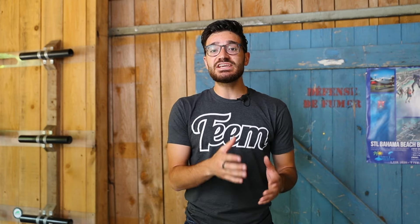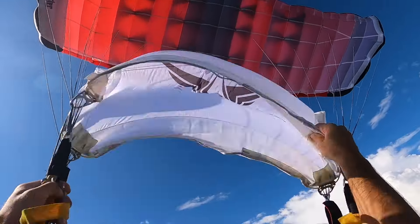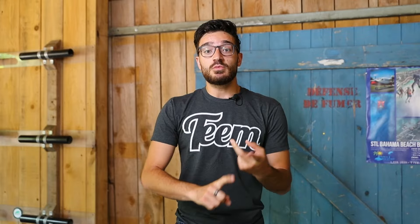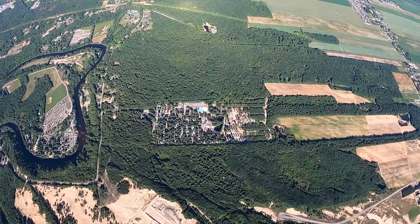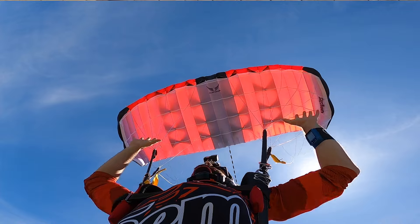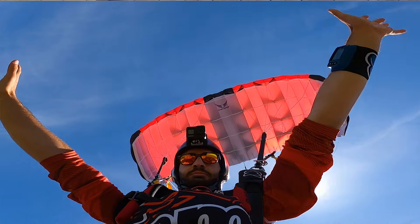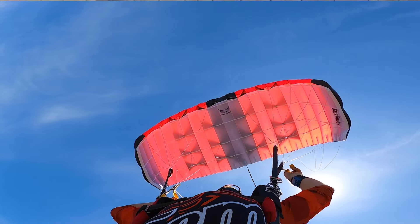Step seven is to go through our post-deployment checklist. This won't change from jump to jump — it's the same checklist every time — but it's an important piece we want to include in our jump plan. First, do canopy control exercises to make sure you have a flyable canopy with no malfunctions. Then do your orientation: find out where you are and where the drop zone is to determine if you can make it back or need to land off. Finally, do your emergency procedures check, because after opening, your handles will be in slightly different positions than on the ground.